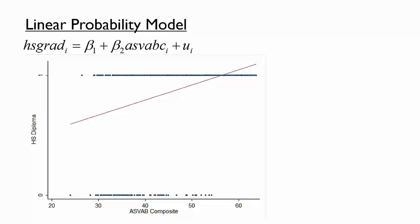Mathematically, any line with a non-zero slope ranges from negative infinity to positive infinity. So there are no guarantees that the predicted values of HSgrad are between 0 and 1 for reasonable values of ASVAB C. The graph shows that there is a range of ASVAB scores for which the predicted probabilities are indeed greater than 1. This is the first sign that a linear probability model may be insufficient in some situations.